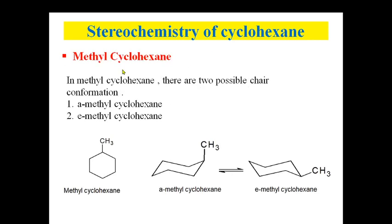Let's see methyl cyclohexane first. It exists in two possible chair conformations. In the first, the methyl group is at the axial position, and in the other, the methyl group is at the equatorial position — labeled A for axial and E for equatorial. To determine which is more stable, we can check using Newman projections.